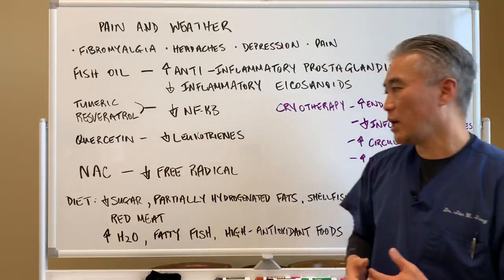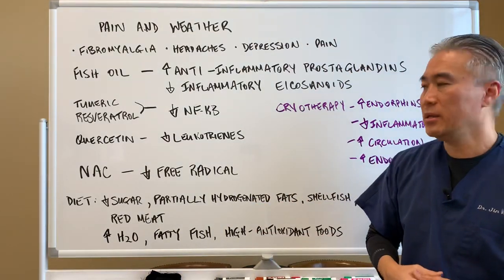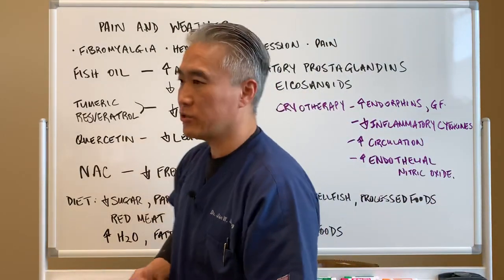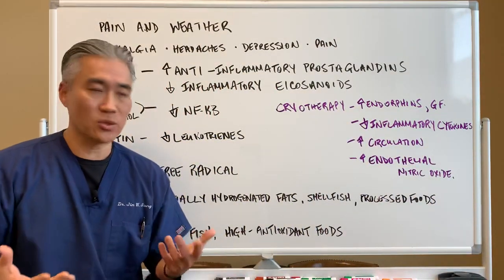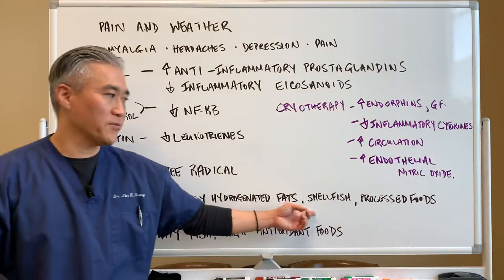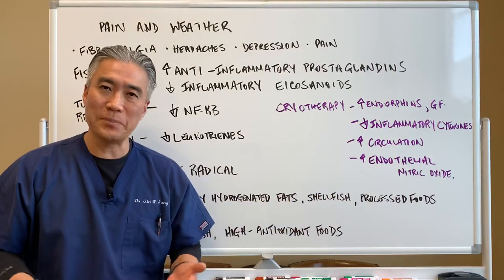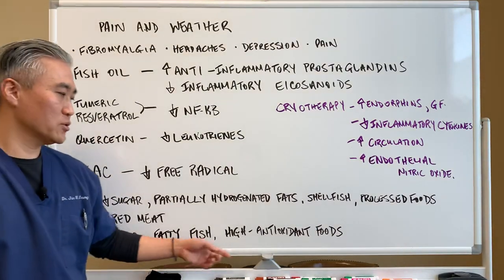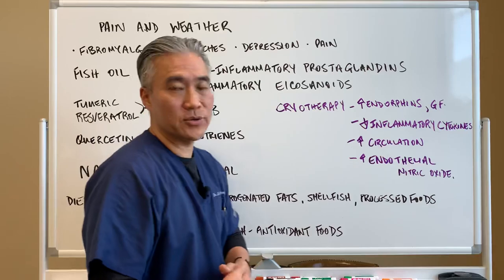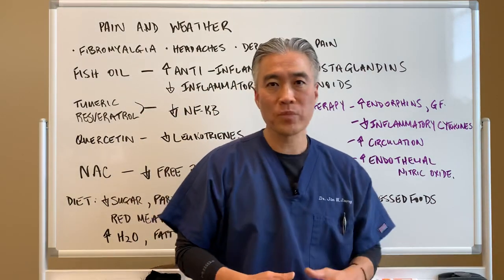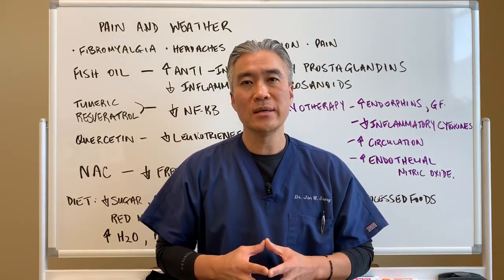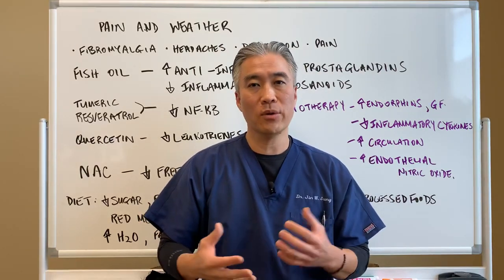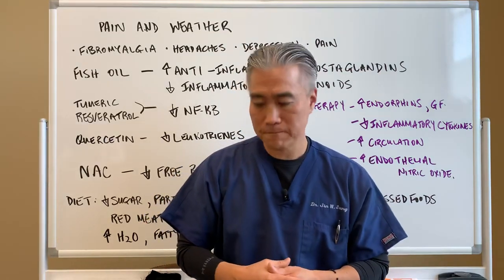Once you accomplish that, you want to change your diet. You have to decrease sugar or refined sugar, partially hydrogenated fats and oils, shellfish, processed foods, and even red meats. You want to increase water intake, fatty fish, and high antioxidant fruits and veggies. You want to increase antioxidants because they will take the oxidative blow of these inflammatory processes and help improve the inflammatory cascade.